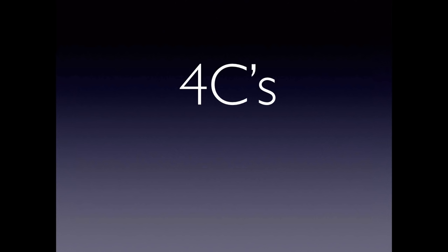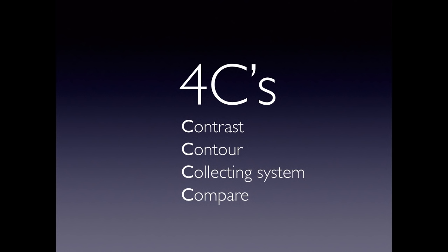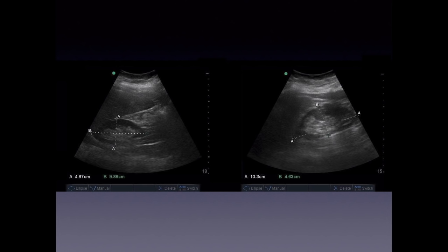A helpful framework for renal ultrasound is the four C's: contrast, contour, collecting system, and compare. Look at the grayscale contrast within the kidney, check the contour for masses or cysts, evaluate the collecting system within the renal sinus, and compare both sides for symmetry. Normal kidney size is about 9 to 12 centimeters long and 4 to 6 centimeters wide.